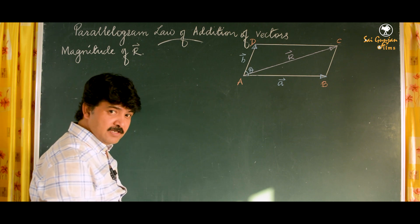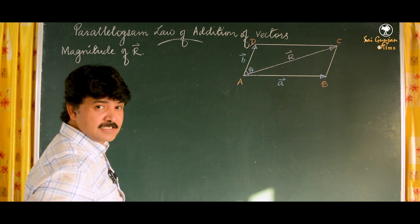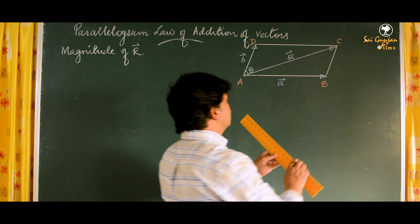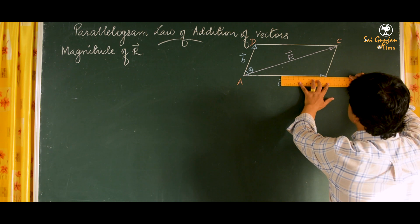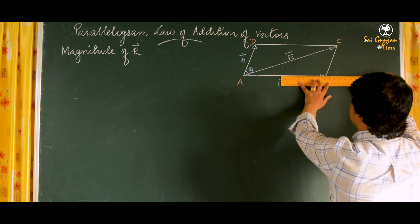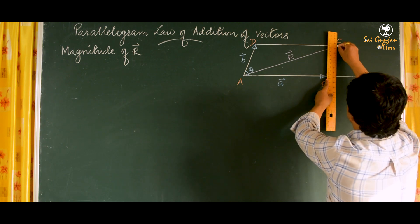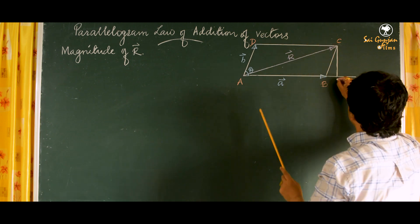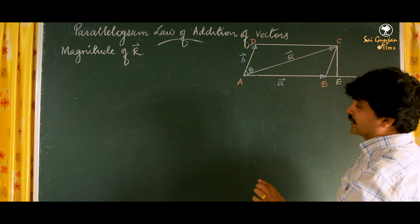Since we need a right angle triangle and there isn't one readily available, we produce the line AB and drop a perpendicular from point C onto this line, calling the foot of the perpendicular point E.